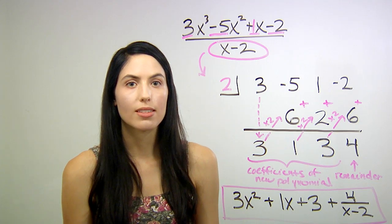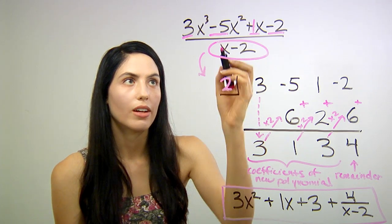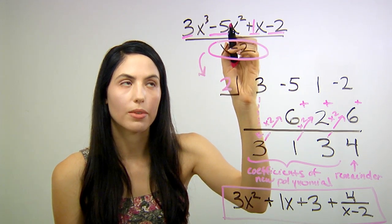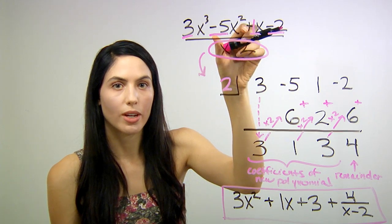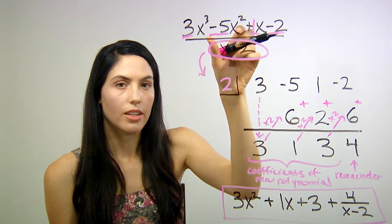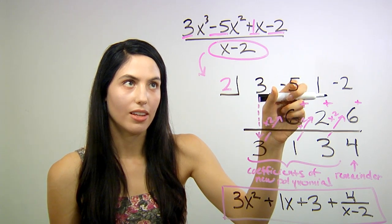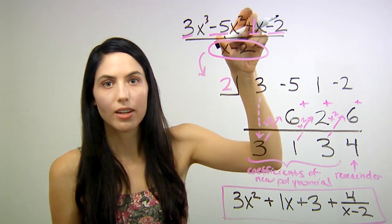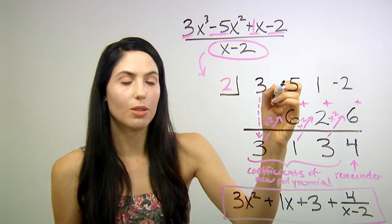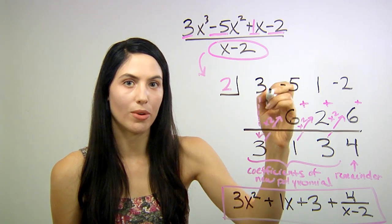So what trips people up is that sometimes you'll get a polynomial where there's a missing term. Say you didn't have an x squared term here. You would actually need to put a zero term as a placeholder instead. So if there was no x squared term, for instance, you would actually put zero here. So remember to do that.